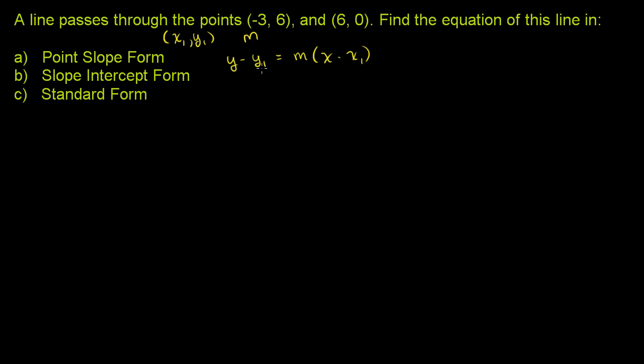For example, if the point (-3, 6) is on the line, then we'd say y - 6 = m(x - (-3)). So it'll end up becoming x + 3. So this is a particular x and a particular y. It could be -3 and 6. So that's point-slope form.